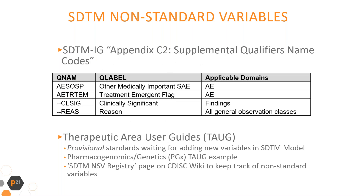The SDTM implementation guide includes Appendix C, Supplemental Qualifier Names, with four standard SUPPQUAL variables. Some SUPPQUAL variables from this list, like treatment emergent flag and other medically important serious adverse events, are required by regulatory agencies. In preclinical data, result modifiers in SUPPQUALs provide details about abnormal findings in MI and MS domains, and this non-standard variable is utilized in almost every non-clinical study. A major source of non-standard CDISC variables is therapeutic area user guides, so-called TAGs.